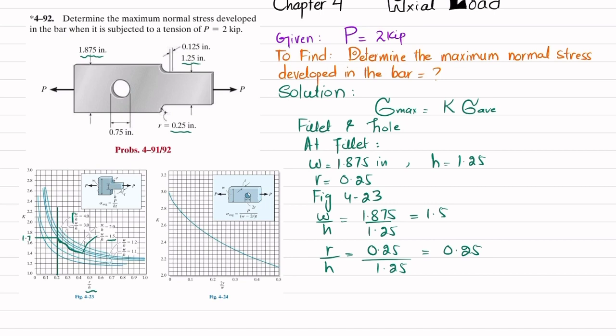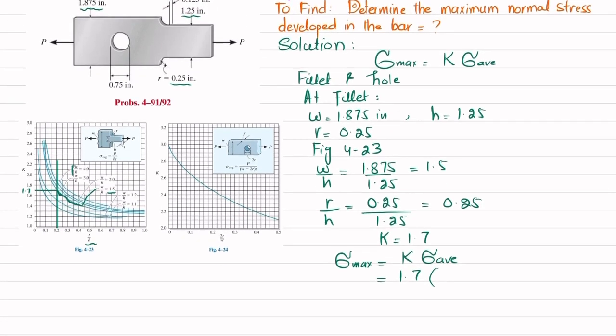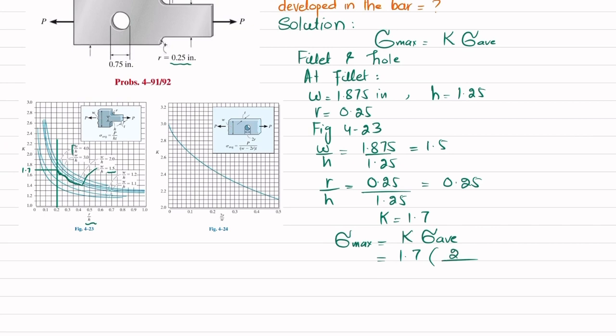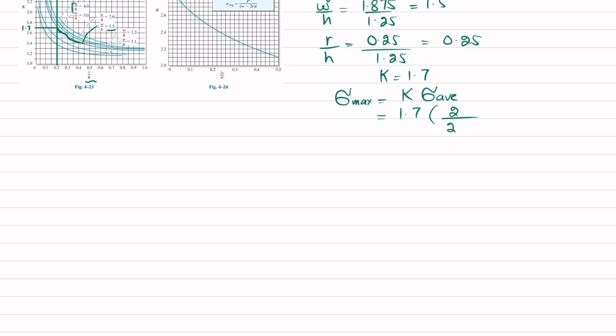This is the curve. You can see it is meeting at this point. If at this point we draw a horizontal line, that will give you the value of K, which is K equal to 1.7. Now we have K, so we know that maximum stress is equal to K into sigma average.